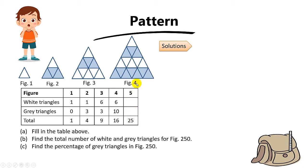But what is the shortcut? The shortcut is to spot the pattern. You can see the difference here is 1. 1 minus 0 gives you 1, then 3 minus 1 gives you 2, 6 minus 3 gives you 3, and 10 minus 6 gives you 4. So you can guess the difference here would be 5. The first pattern you must observe is that the difference between white and grey triangles equals the figure number.